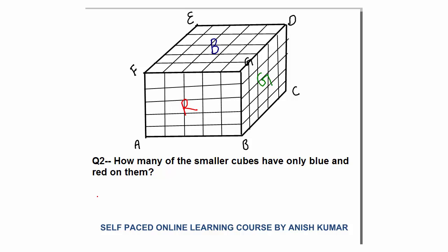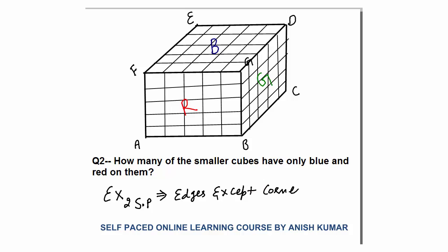Question number 2: How many of the smaller cubes have only blue and red? We need exactly 2 colors — blue and red. For exactly 2 painted surfaces, the location is edges except corners. If you remove the corners from the edge, the remaining cubes on the edge have exactly 2 colors on them. But we need specifically blue and red.